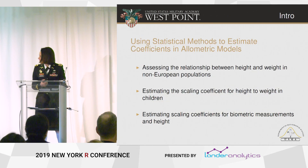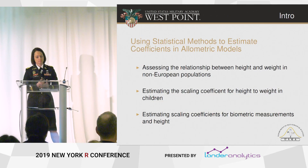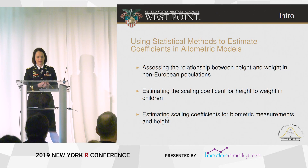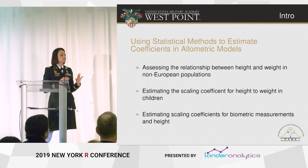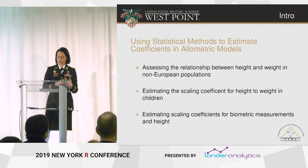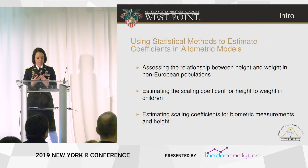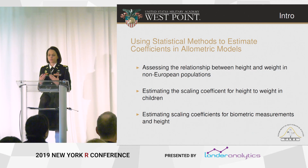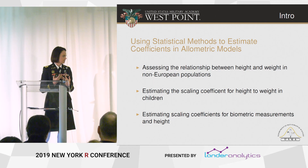Today I'm going to talk about using statistical methods to estimate coefficients in allometric models. Allometry is just a study of the relationship between body size and things like shape, anatomy, and different biological measures. There are a variety of fields and applications where these are important.